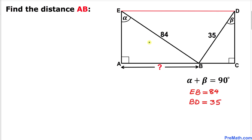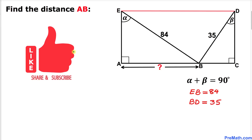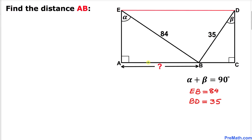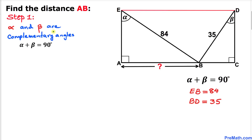The length of line segment EB is 84 units, and the length of line segment BD is 35 units. We are going to calculate the distance AB. Let's go ahead and get started with the solution.